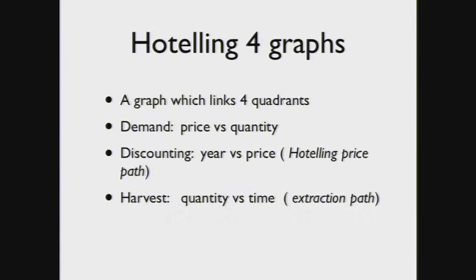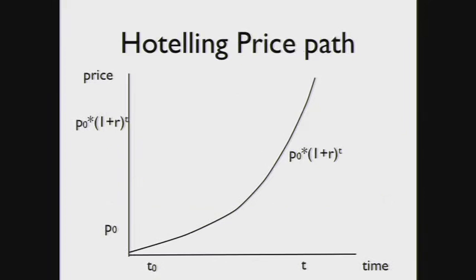This graph links four different quadrants. First is a demand curve with price and quantity. The discounting curve is time and price. The extraction path that we're trying to analyze tells us how much to extract each time period, how much to harvest from our mine. This is like an optimal control model telling us the optimal path for pulling resources out of our mine. We know how much ore is in the mine. We have a price path - given a starting price and an interest rate, we can figure out what the price will be in any future year. Price is rising with the interest rate.